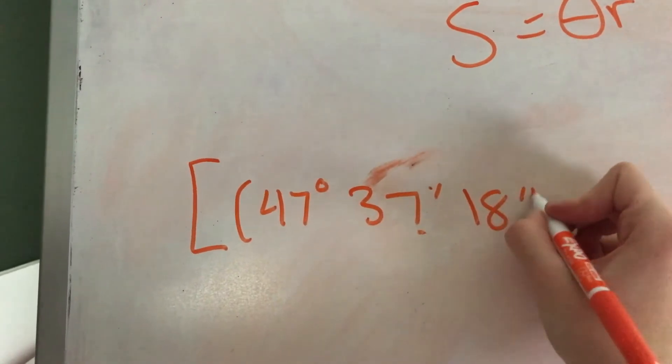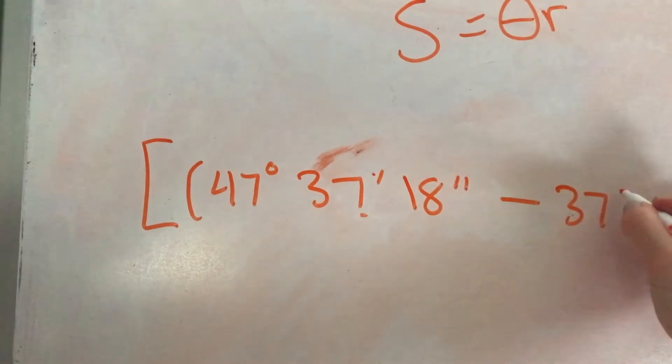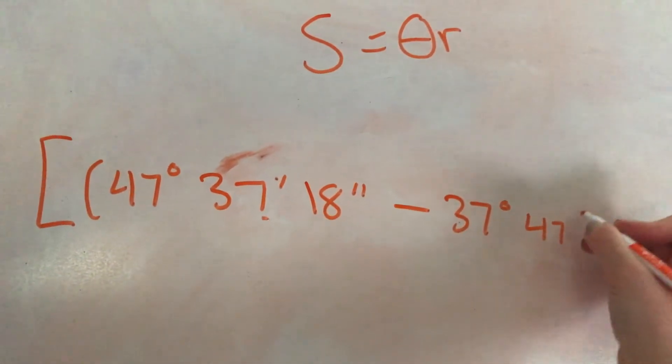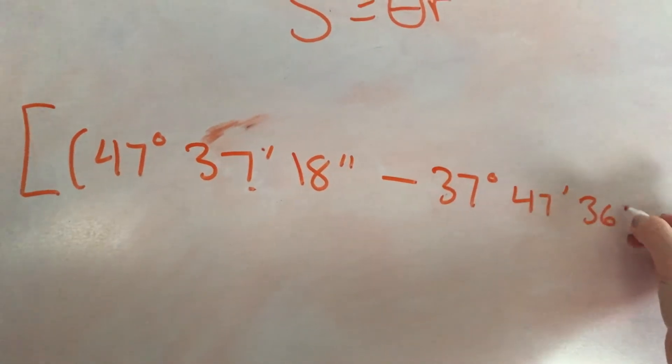and 18 seconds. We're going to do minus 37 degrees, 47—minutes, why do I keep saying seconds?—and 36 seconds.